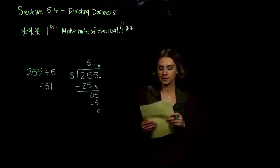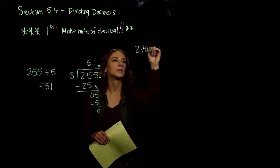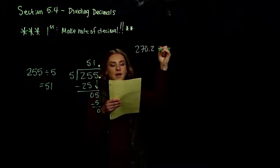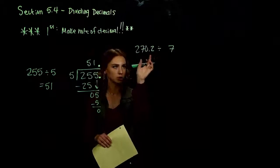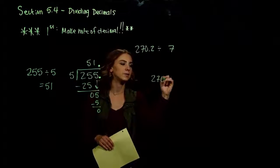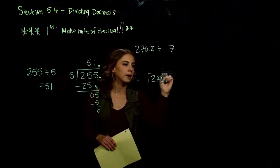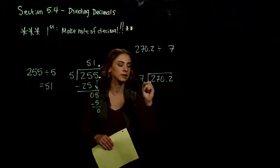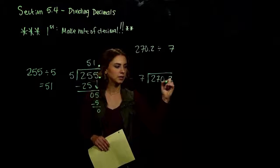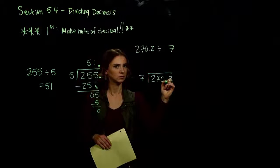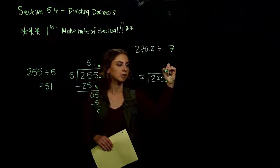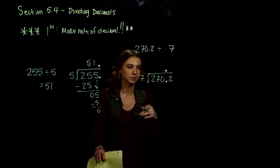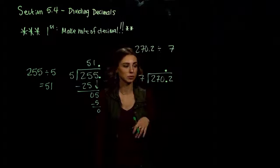What about if we take 270.2 and divide that by 7? The larger one, 270.2, goes on the inside, divided by 7 on the outside. We make note of where the decimal is — it sits in the dividend down here — and it's going to live in the same spot inside our quotient, our answer on top. We make note of where it is, then we just behave as normal.